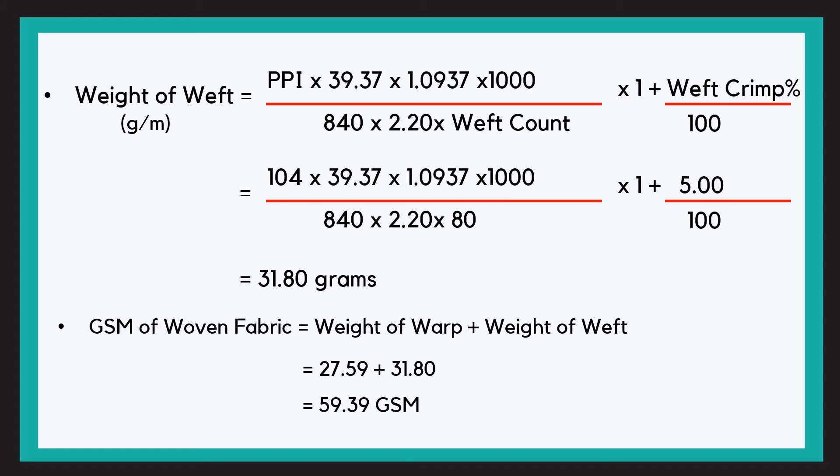So now we have to get grams per square meter. We have weight of warp and weight of weft, so we will add both: 27.59 + 31.80, which gives me 59.39 grams per square meter. So this was it, very simple calculation. This is my course. Difficult mat samjho aur ratta mat maro. Samajhye ke wo values kaha pe use ki jati hai. If you understand, you will never forget, and everything is technical.